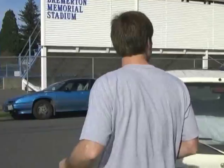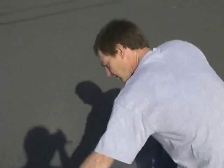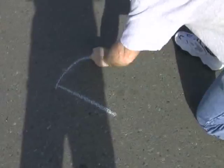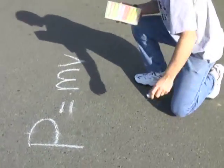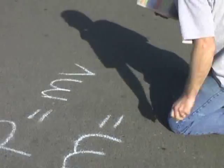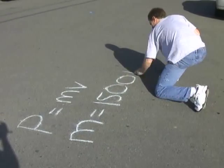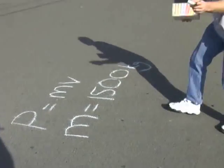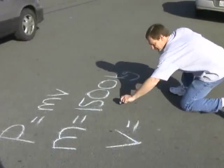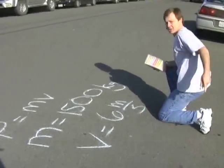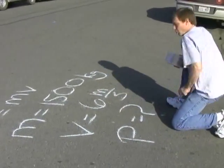So what we had is we had a car, and a car's mass is about 1,500 kilograms. So momentum is mass times velocity. The mass of the car is about 1,500 kilograms, and the velocity of the car — she's going about 6 meters per second. So the question is: what's the momentum?